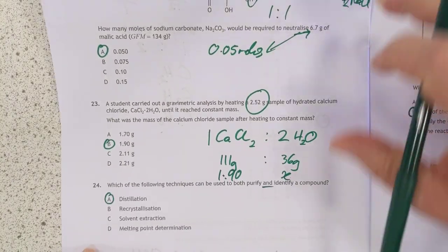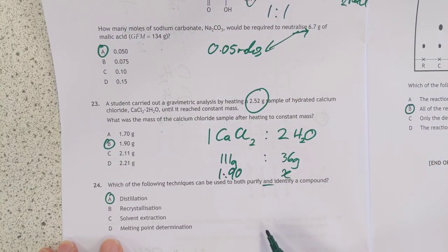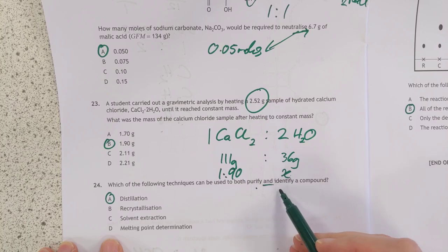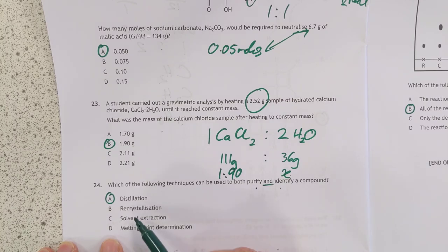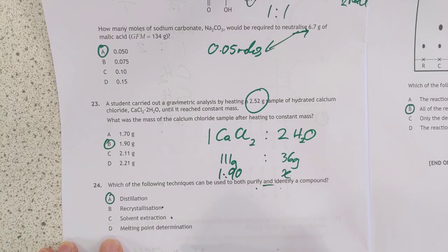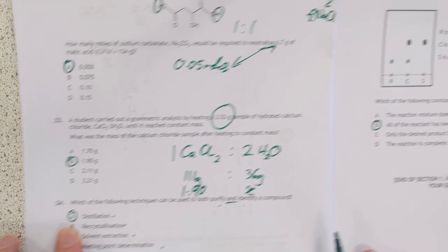24 was a sneaky question. I quite like 24. Whoever wrote 24 is a clever question because you've got to purify and identify a compound in a single step. Now, that's purification only. That's purification only. That is determination only. So that's identification. But this one here will both separate two liquids and also enable you to measure the boiling point. So it's distillation for that one.